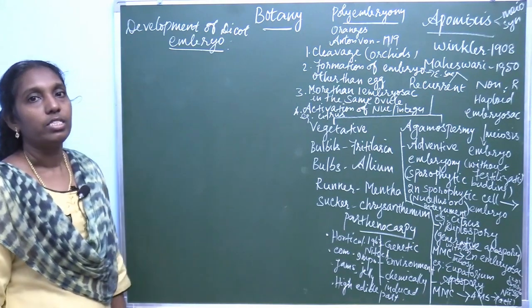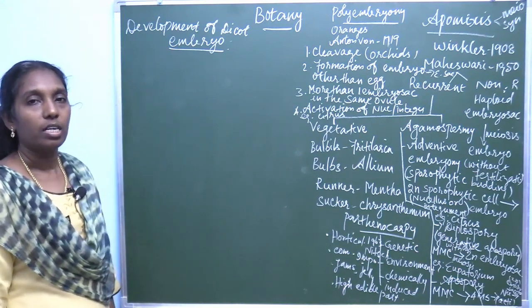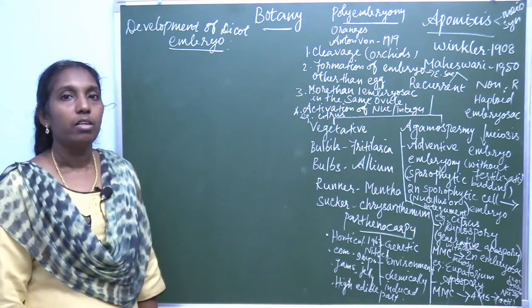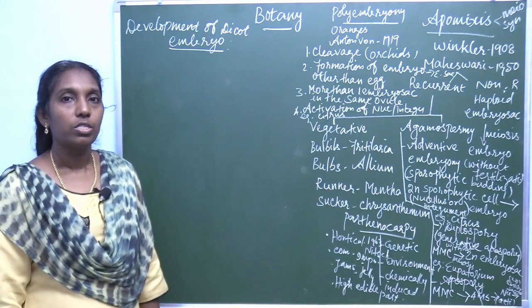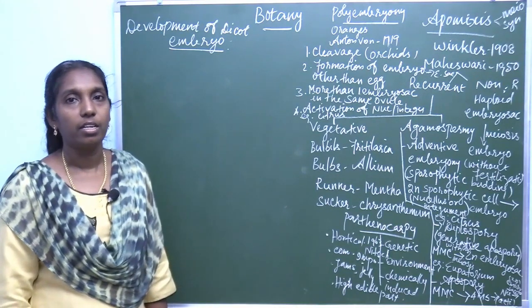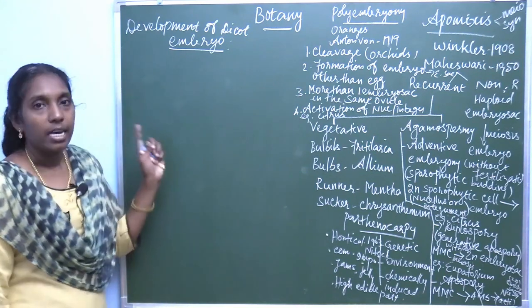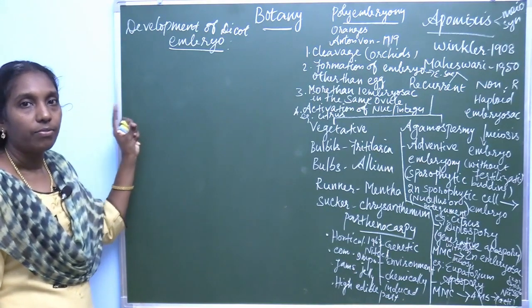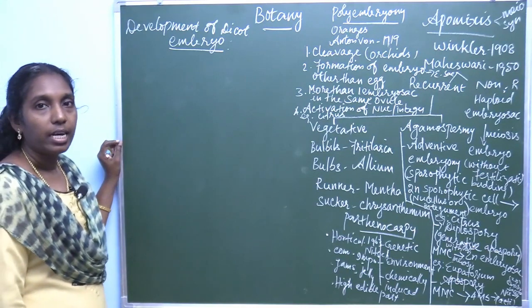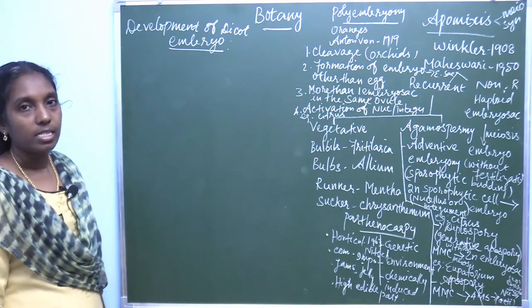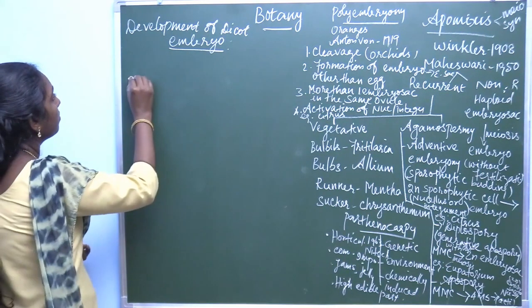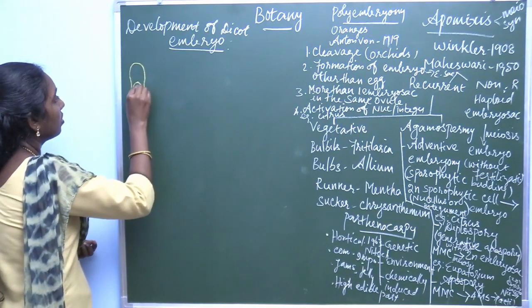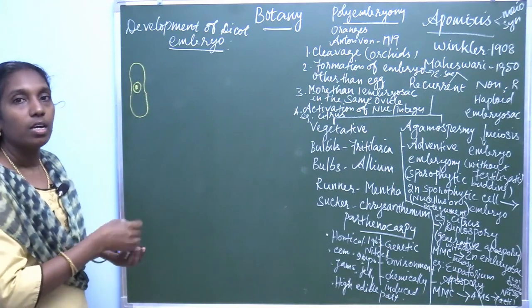The dicot embryo develops in two stages: the Onagrad type and the Crucifer type. Onagrad belongs to the family Onagraceae, and Crucifer belongs to Brassicaceae — examples being cabbage and cauliflower. The zygote is the result of fertilization — the male and female gametes fuse together to form the zygote.